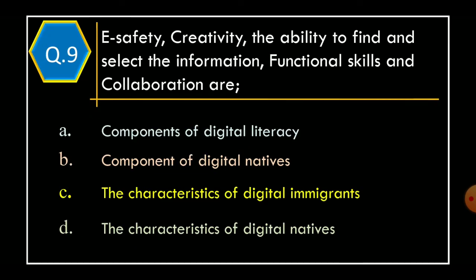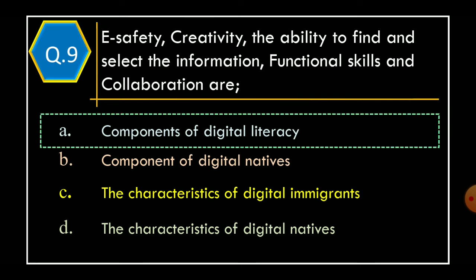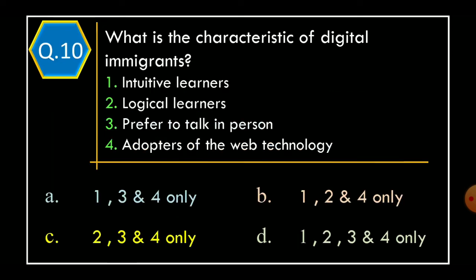Question 9: E-Safety, creativity, the ability to find and select information, functional skills and collaborations are: Option A: Components of digital literacy. Option B: Components of digital natives. Option C: Characteristics of digital immigrants. Option D: Characteristics of digital natives. The correct option is Option A: Components of digital literacy.